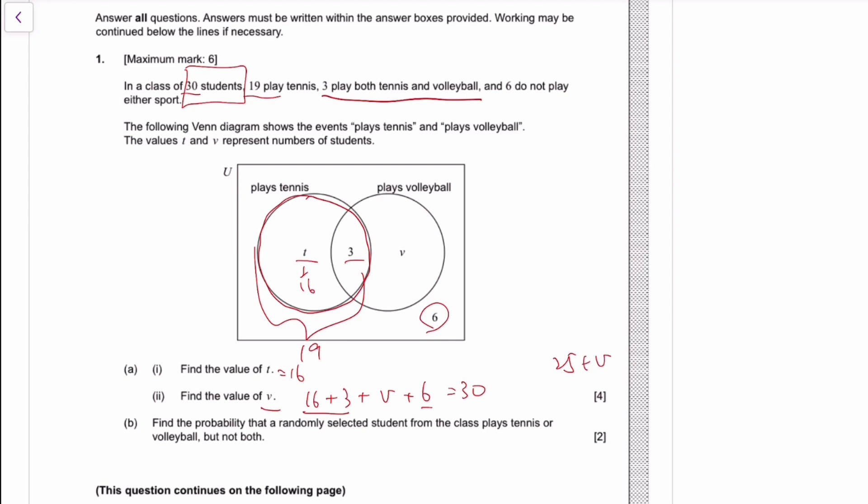16 plus 3 is 19, plus another 6 is 25, so V is 5. Find the probability that someone selected at random plays either tennis or volleyball but not both. That's 16 plus 5 over the total number of people 30, so that's 21 over 30, which simplifies to 7 over 10.